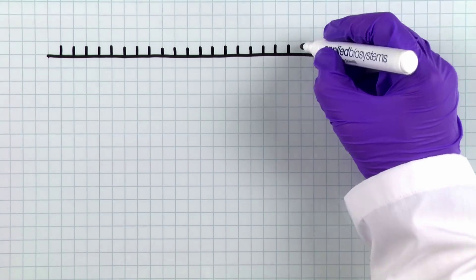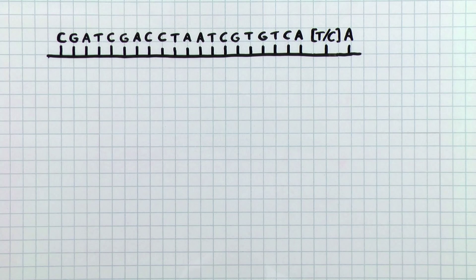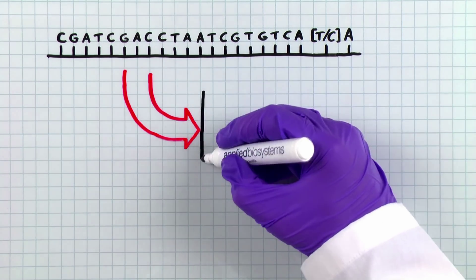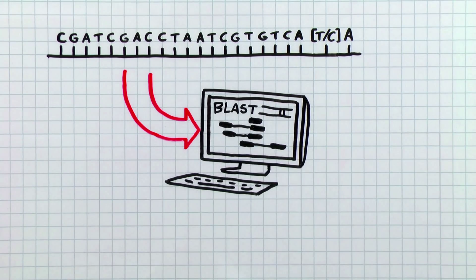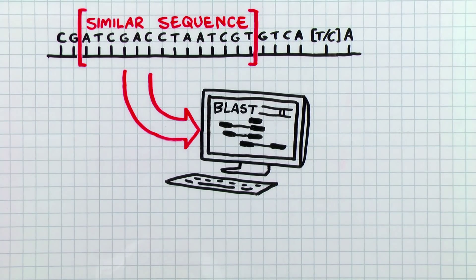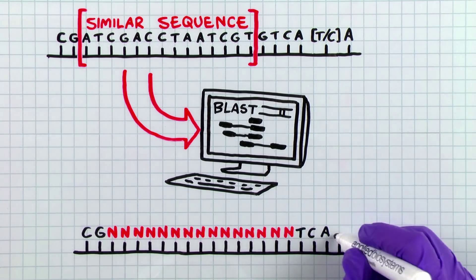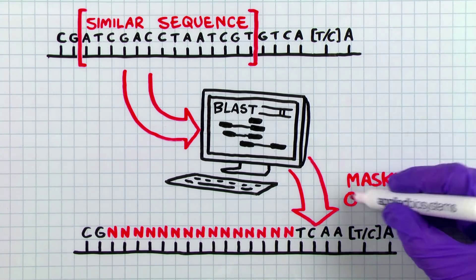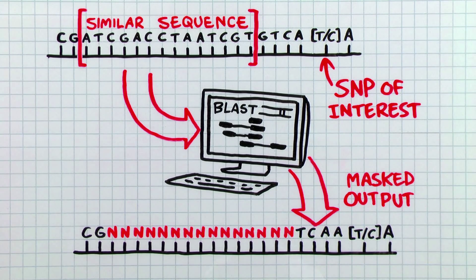The last step in preparing your sequence is checking whether your target sequence is unique in your organism of study — we call this Genome QC. Using public databases and tools such as UCSC BLAT or NCBI BLAST, you can check whether there are any regions of your target sequence that are similar to sequences in the reference database for a particular organism. If you find any similar sequences, you should mask those regions with Ns. This will ensure that your assay is only detecting your target region containing your SNP of interest, and not other regions in the genome.